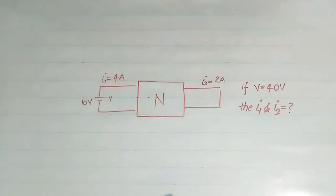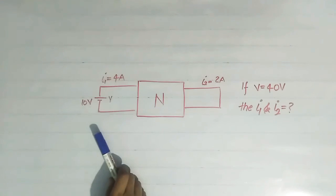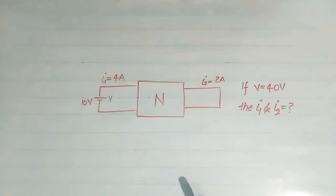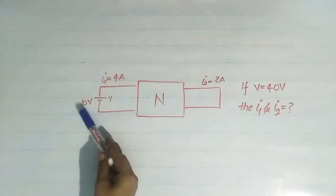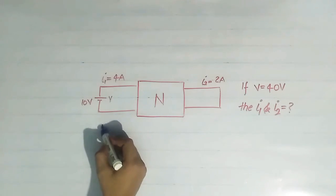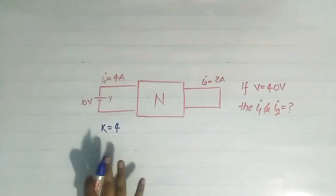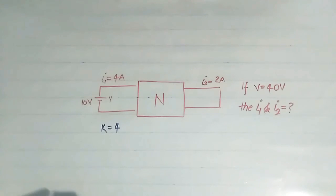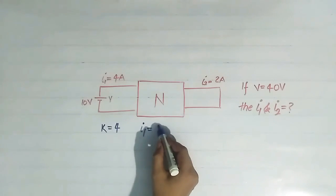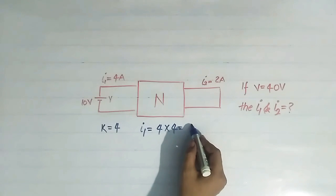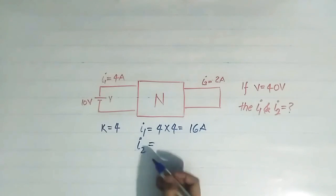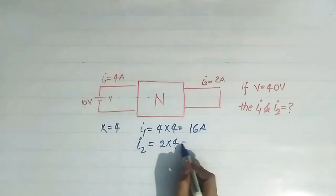We apply the principle of homogeneity. In a linear network, if the source is multiplied by factor k, then the response also gets multiplied by factor k. Here the source is multiplied by factor k equals to 4, because the source has become 4 times — 40 volt. So the current in all branches will also get multiplied by 4. Therefore i1 will become 4 into 4 equals to 16 ampere, and i2 will become 2 into 4 equals to 8 ampere.